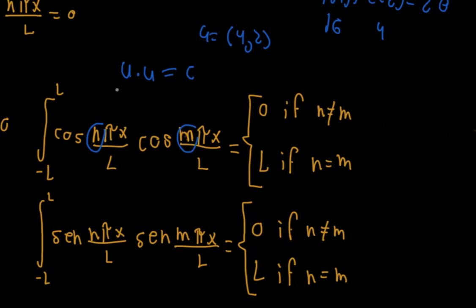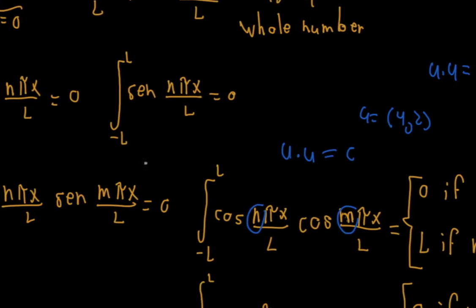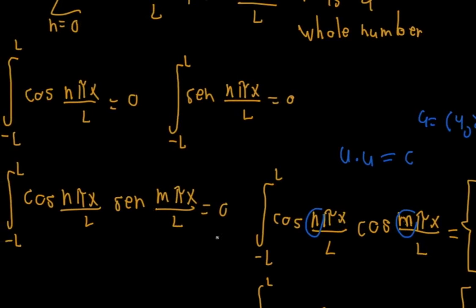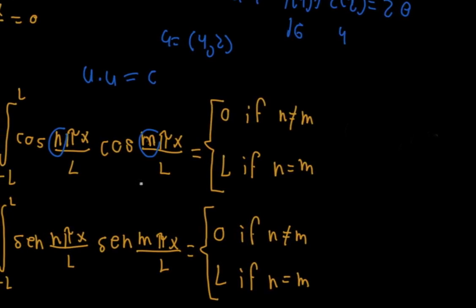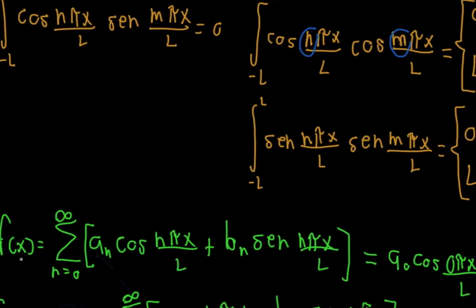By the way, Fourier wasn't just a mathematician — he fought in the French Revolution and in the conquest of Egypt. The guy was an adventurer. But let's move on. So I have this vector space and it has these properties according to the rules that I made up. Fourier then thought, what if I can represent any function I want — this could be anything, like e to the x times natural log of x, maybe, it could be whatever I want — as a linear combination of my base vectors. Here, aₙ and bₙ are some constants.